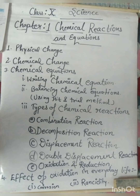Types of Chemical Reactions: there are 5 types of chemical reactions. 1. Combination Reaction. 2. Decomposition Reaction.